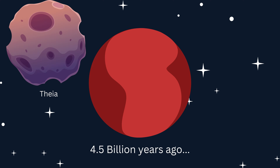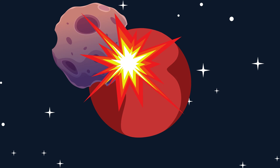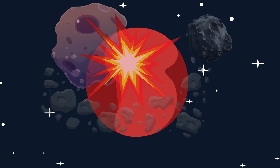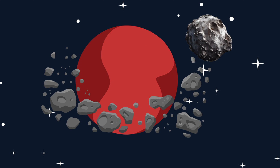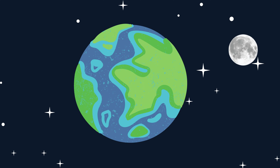Scientists believe that during these early days, a Mars-sized object named Theia smashed into the young Earth, releasing a massive amount of energy and debris. This cataclysmic impact likely caused our planet to tilt on its axis, creating the axial tilt we see today. The cloud of debris orbiting the Earth would eventually clump together to form the moon.